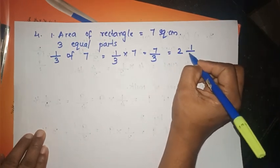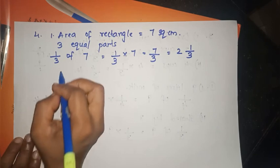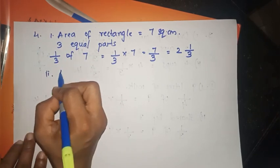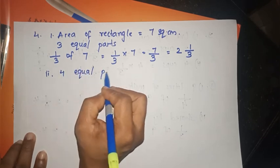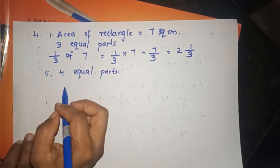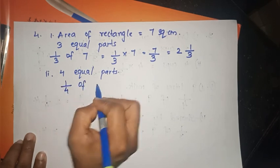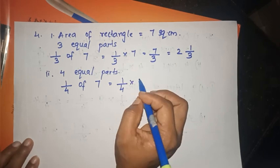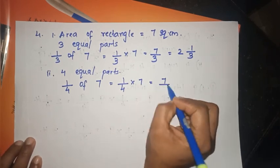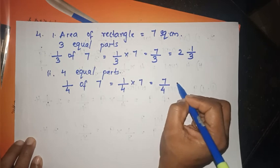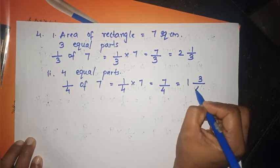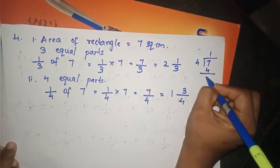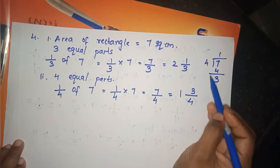The answer is 2 and 1/3. For the second part: what if it were cut into 4 equal parts? 4 equal parts: 7/4. Dividing: 1 remainder 3, so the answer is 1 and 3/4.